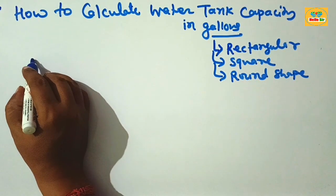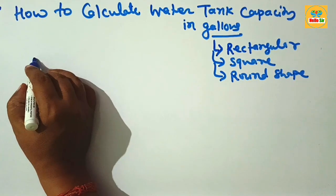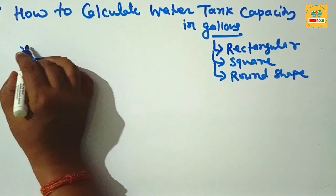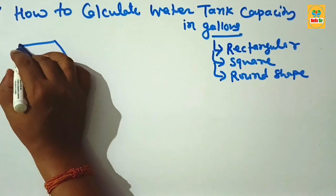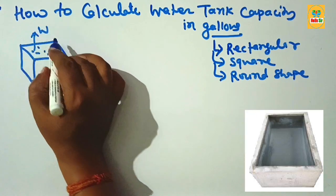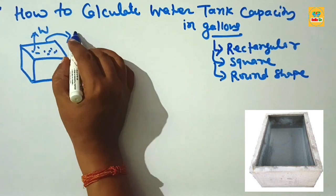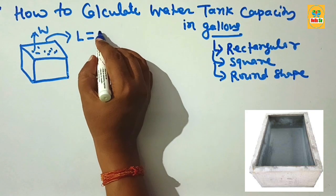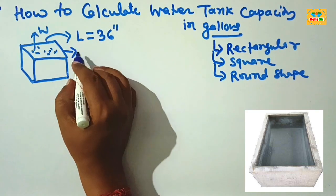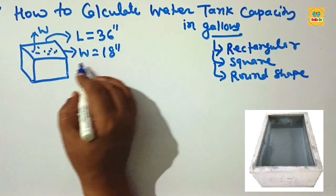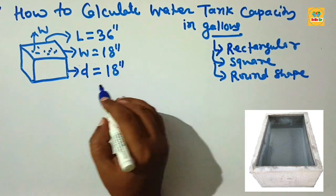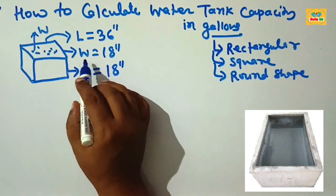First, we make a rough diagram to take the example of a rectangular water tank. This space is filled with water. This one is the length of the water tank — suppose the length of the rectangular water tank is 36 inches. This one is the width, which is about 18 inches, and the depth of the water tank is about 18 inches.